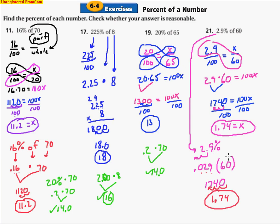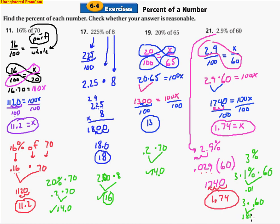For 2.9% of 60: that's pretty close to 3%. To find 3% of 60, remember 1% is 0.01, so 1% of 60 is 0.6. Then multiply by 3: 3 times 0.6 gives 1.8. That's pretty close to our answer of 1.74. So yes, it's reasonable. Checking for reasonableness just means estimating — and that's how you do it.